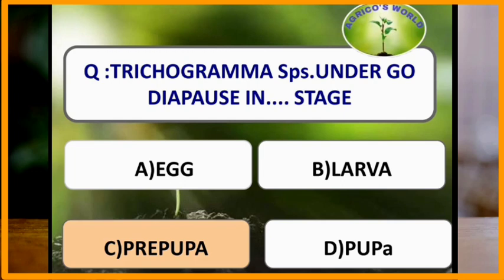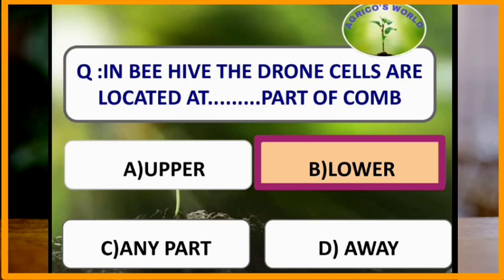In a beehive, the drone cells are located at the lower part of the comb.